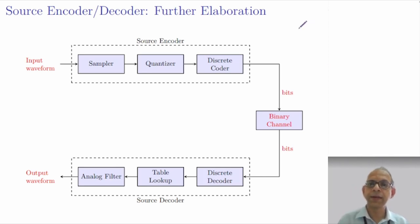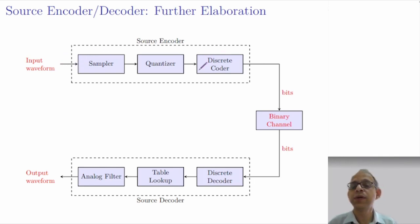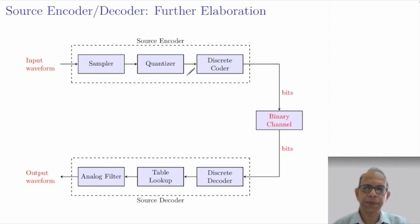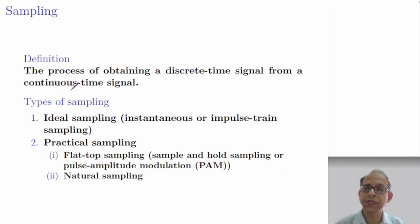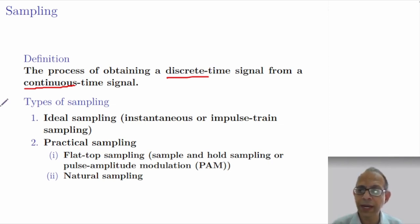We have seen that in a digital communication system, if the message signal happens to be in the analog form, it must first be converted to a digital form. This analog to digital conversion is achieved by the process of sampling followed by quantization. Sampling is essentially the process of converting a continuous time signal to a discrete time signal. It can be done through various ways; we were looking at the ideal way, which is the impulse train sampling.